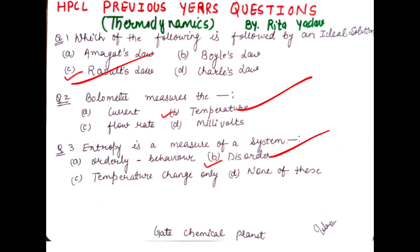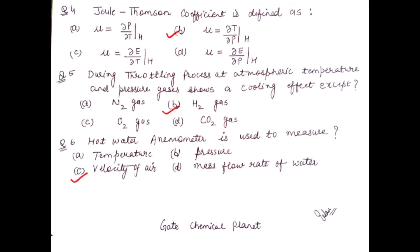Question number four: the Joule-Thomson coefficient is defined as? The correct option is B, where the Joule-Thomson coefficient μ is equal to (∂T/∂P) at constant enthalpy H. This is a very important question for your examination and has been repeated many times in previous year papers.